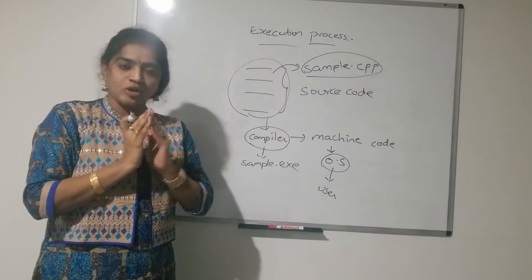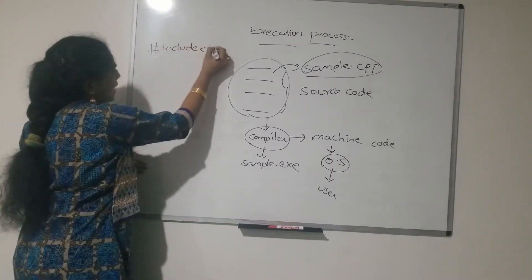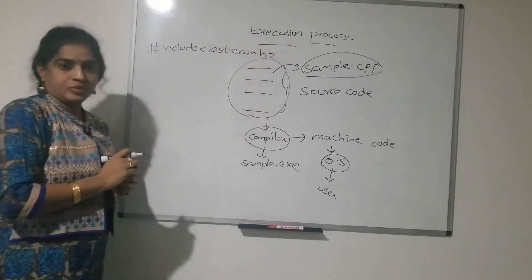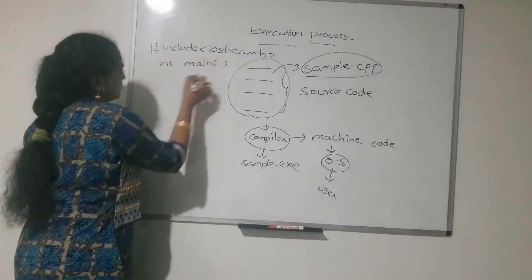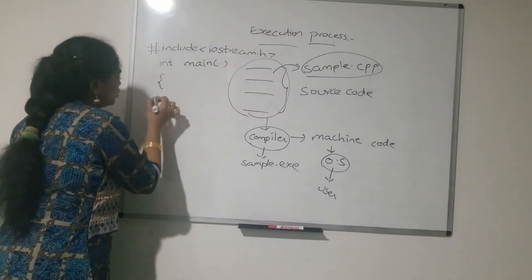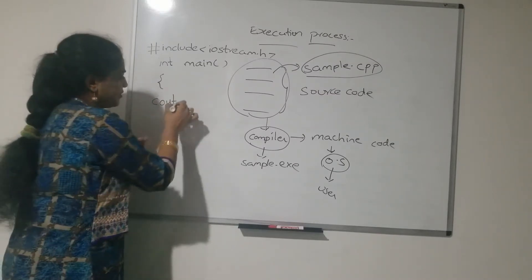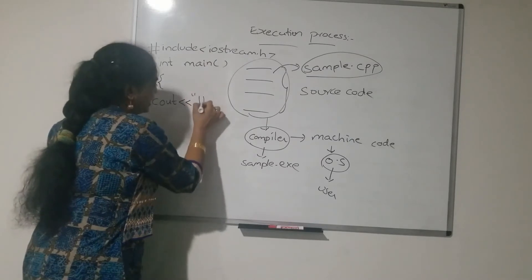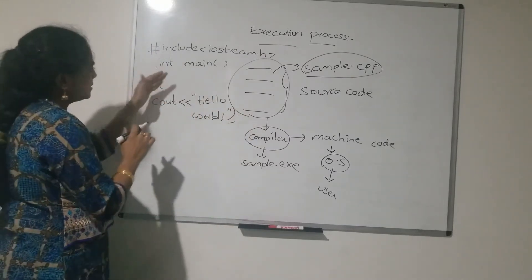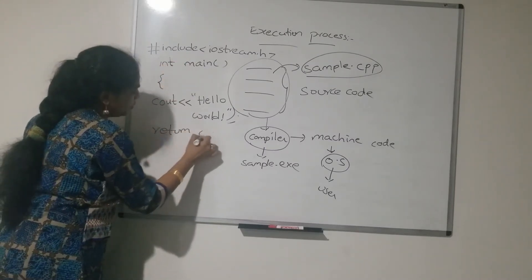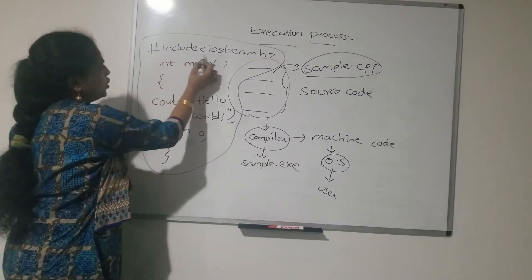I want to print 'Hello World' on the output screen. Here is how to write that: #include iostream.h — this is the header file. Then int main(). To display 'Hello World', since it is an output function, you use cout. So here I write: cout << "Hello World". Then, since it is int main, you use return 0. This is my code.